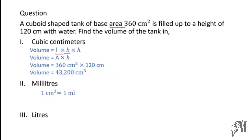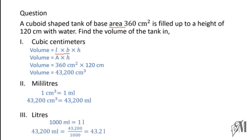Since 1 cubic centimeter equals 1 milliliter, 43,200 cubic centimeters equals 43,200 milliliters. Now to convert milliliters to liters, divide by 1000, because 1000 milliliters equal 1 liter. Therefore, the answer in liters is 43.2 liters.